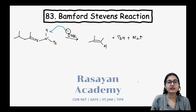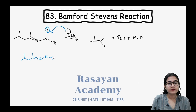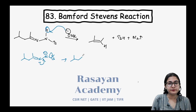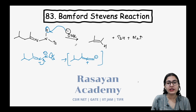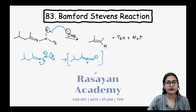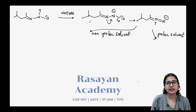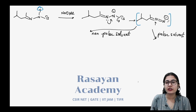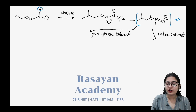Sodium methoxide in the presence of tosylhydrazone removes the acidic proton present on the nitrogen, giving a molecule with a negative charge. The nitrogen then uses its electron pair and eliminates the tosyl group. You are having a negative charge and a positive charge — this is the intermediate. A proton has been removed and this is your intermediate.